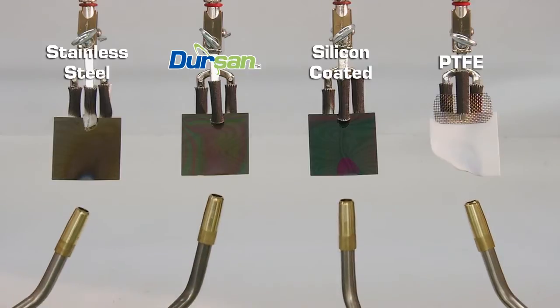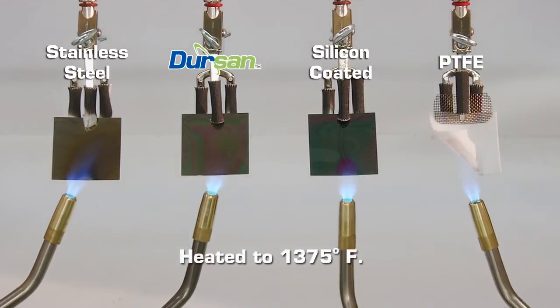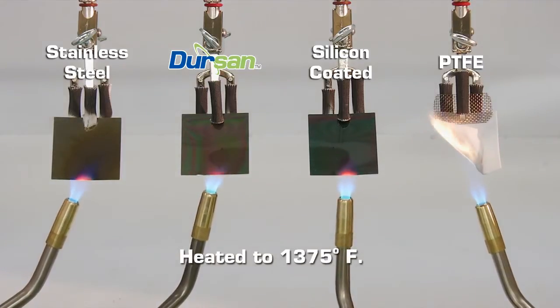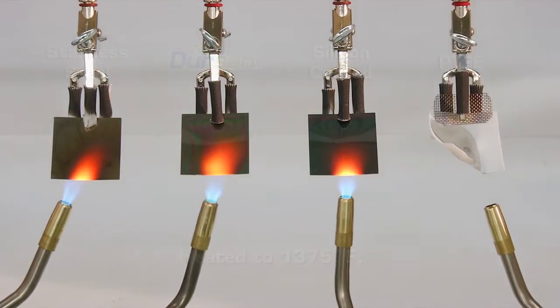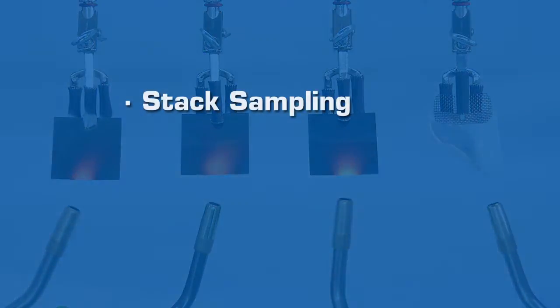In this demonstration, untreated stainless steel, Dursan, silicon, and PTFE coatings are heated to extreme temperatures to demonstrate the durability in the high temperatures common for stack sampling.